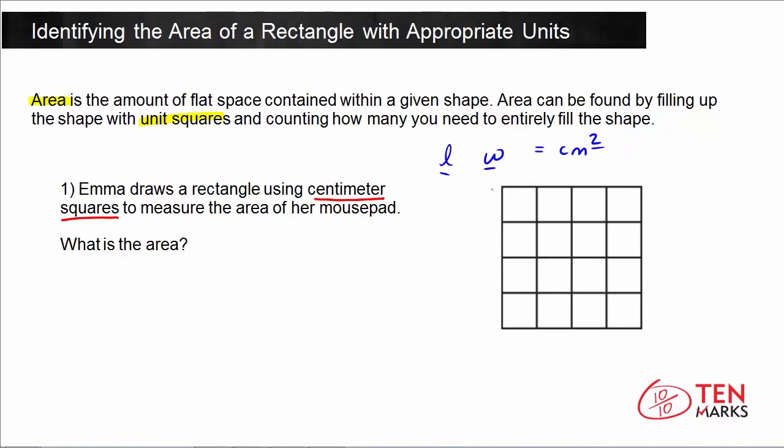So what that means is that this shape is her mouse pad, and what she's done is put unit squares inside. She decided to measure her unit squares in centimeters, so it means each square has one centimeter on each side. So now let's think about how we would find the total area. To find the area, you would count up how many unit squares it takes to fill up the space of her mouse pad.